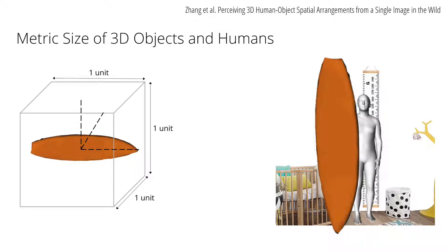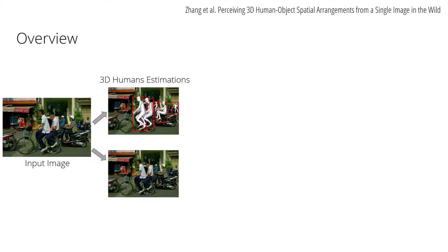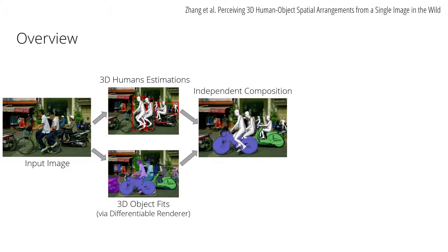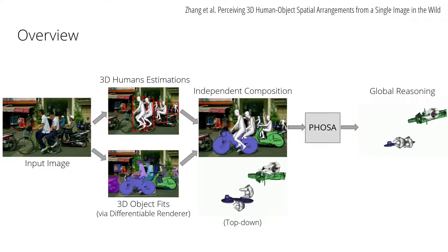We denote the per-instance scalar converting between the object's arbitrary units to metric units as the intrinsic scale. To put everything together, we propose an optimization-based approach that reasons about human-object interaction. Given an image, we extract bounding boxes and use a state-of-the-art human pose estimator to predict 3D human meshes. We also predict instance masks, which we use to fit per-class exemplar meshes to the masks using a differentiable renderer. Naively placing the humans and objects into the same scene looks reasonable from the frontal viewpoint, but from top down we can see that the composition is implausible. To resolve the inherent scale ambiguity, we present our optimization module PHOSA, Perceiving Human-Object Spatial Arrangements. The optimization produces a scene configuration that is more plausible.